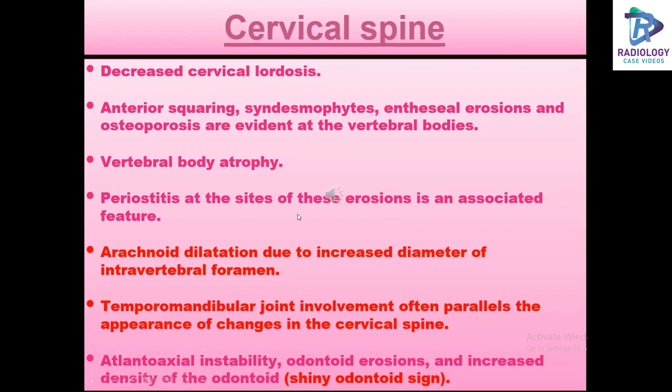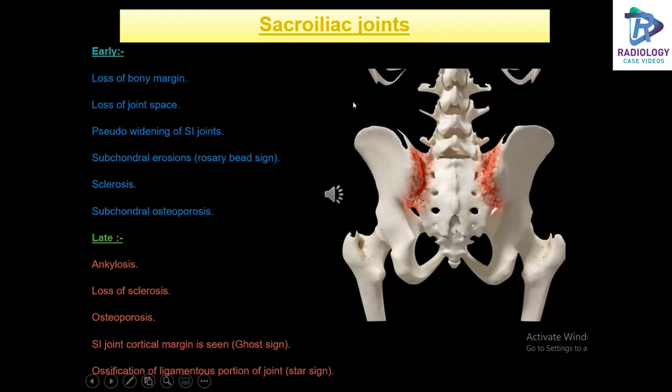The sacroiliac joints are the most commonly and early involved joints in ankylosing spondylitis. Early changes include loss of bony margins, loss of joint space, pseudo-widening, and subchondral erosions, which is the rosary bead sign. We then see sclerosis and subchondral osteoporosis. Late features include ankylosis, loss of sclerosis, osteoporosis, the ghost sign where the SI joint cortical margin is visible, and the star sign from ossification of the ligamentous portion of the joints.